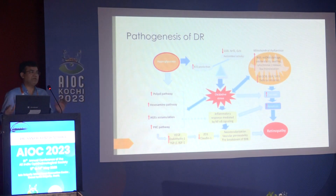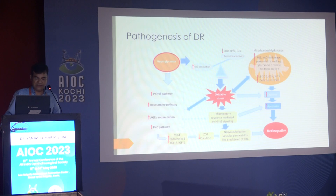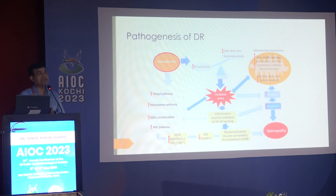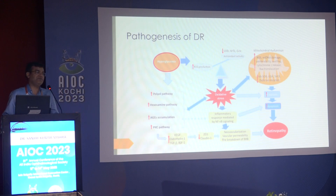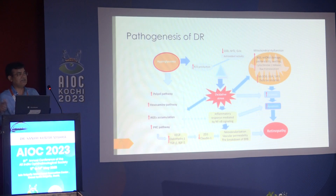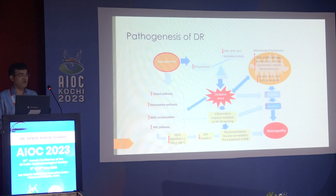How does diabetic retinopathy pathogenesis occur? The basic crux is hyperglycemia and oxidative stress — these two are interlinked. Various pathways come into play: polyol pathways, hexamine pathways, AGE accumulation, and PKC pathways. They are all interlinked. They cause oxidative stress which leads to an inflammatory response, and this inflammatory response causes neovascularization and increase in VEGF. Ultimately VEGF is increased because of these pathways, and VEGF also adds to the formation of new vascularization, leading to retinopathy.